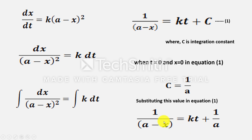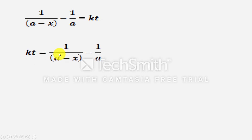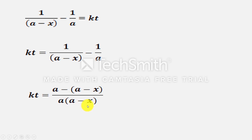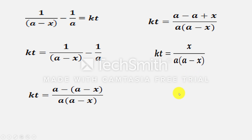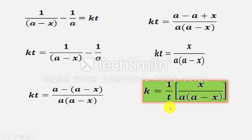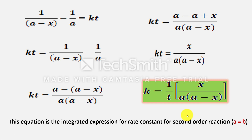Putting the value C = 1/A into equation 1, we get 1/(A−x) = kt + 1/A. Bringing 1/A to the left-hand side: kt = 1/(A−x) − 1/A. Taking LCM as A(A−x) and simplifying, A − (A−x) = x, so kt = x / [A(A−x)]. Therefore k = (1/t) × x / [A(A−x)]. This is the expression for rate constant for second order reaction when A = B.